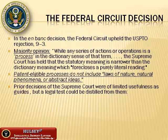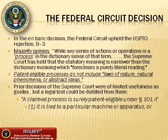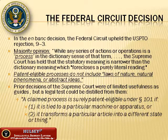Nonetheless, a legal test could be distilled from prior decisions. A claimed process is surely patent-eligible under Section 101 if: (1) it is tied to a particular machine or apparatus, or (2) it transforms a particular article into a different state or thing. The court then considered whether this two-branched test should be considered all-inclusive — that is, as stating indispensable conditions of patent eligibility. It concluded that the answer was affirmative, even though much of the language of the Supreme Court's patent-eligibility cases was more reserved.